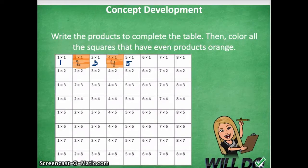Write the products to complete the table, then color all the squares that have even products orange. When I look at the table, I can see that two times one equals two. Two is an even number, so I colored the square orange.